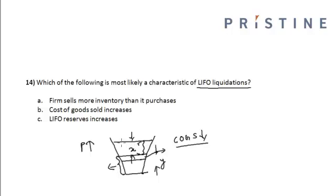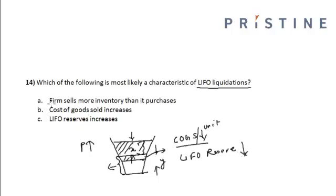So if we mix the currently purchased inventory with some inventory from the earlier period, the cost of goods sold per unit goes down, and the LIFO reserve will also go down. Looking at the options: option A says the firm sells more inventory than it purchases — this is correct. The cost of goods sold increases — this is incorrect, since COGS per unit decreases. The LIFO reserve decreases — this option is also incorrect.